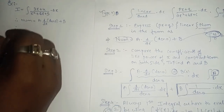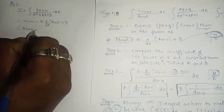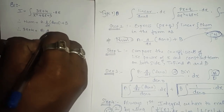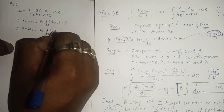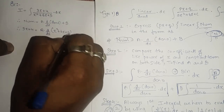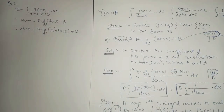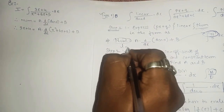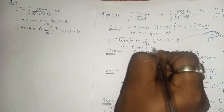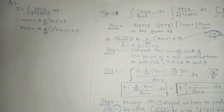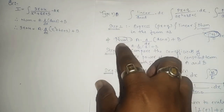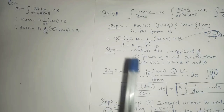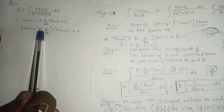So we write: 3x plus 4 equals A times derivative of denominator, which is x squared plus 6x plus 5, plus B. You can also remember this format as: linear equals A times derivative of quadratic plus B. The format is: numerator equals A times derivative of denominator plus B.